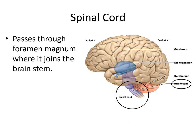The spinal cord passes through the opening of the skull, the foramen magnum of the occipital bone, where it joins the brain stem. Here we see the spinal cord where it attaches to the brain stem. It's almost indistinguishable where it joins, but it does get a little wider toward the brain stem.